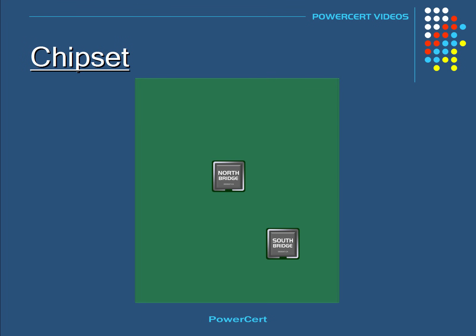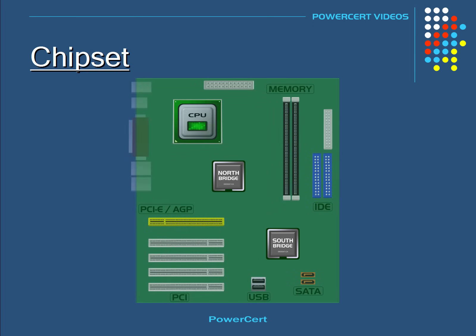The chipset basically consists of two chips. One is called the North Bridge and the other is called the South Bridge. The North Bridge is located in the upper or northern part of the motherboard, providing you're looking at the motherboard in the upright position. It's located near the CPU and is directly connected to the CPU. It's also directly connected to the memory and the AGP and PCI Express slots.